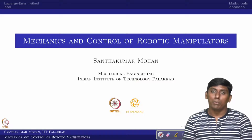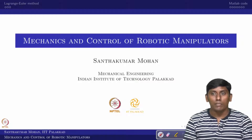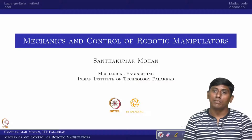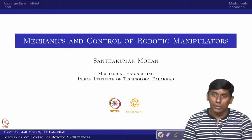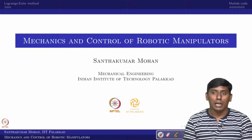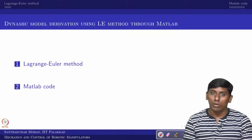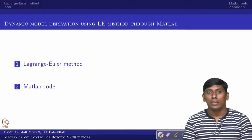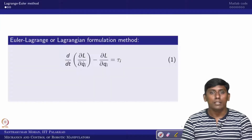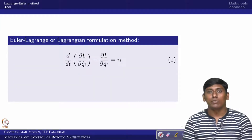Welcome back to Mechanics and Control of Robotic Manipulator. In the last lecture we saw how to derive the equation of motion using the Newton-Euler method. In this particular lecture we are going to see the same thing with the help of the Lagrangian-Euler method again in a MATLAB environment. We will recall what the Lagrangian-Euler method is and how we can implement it in MATLAB, using the same example.